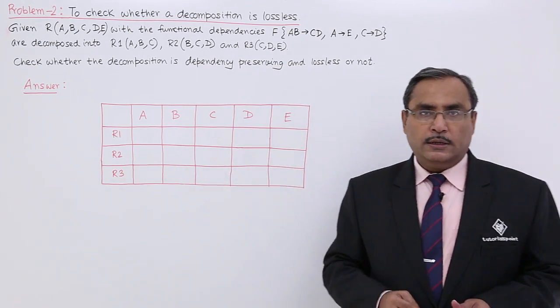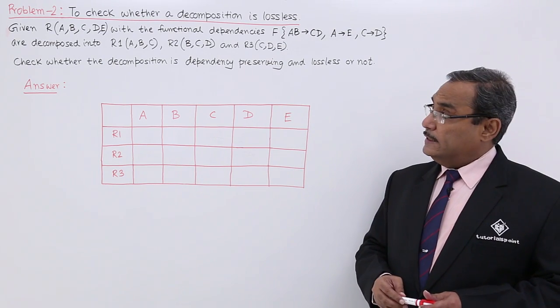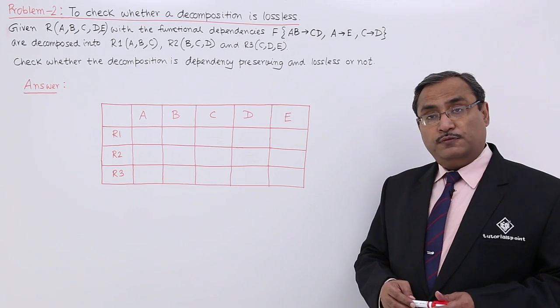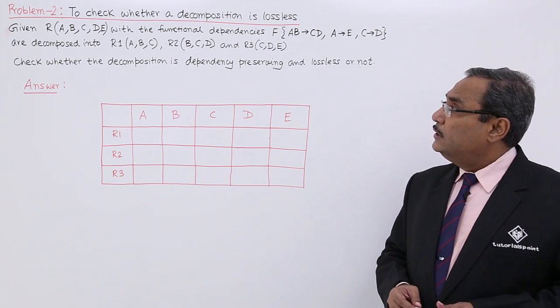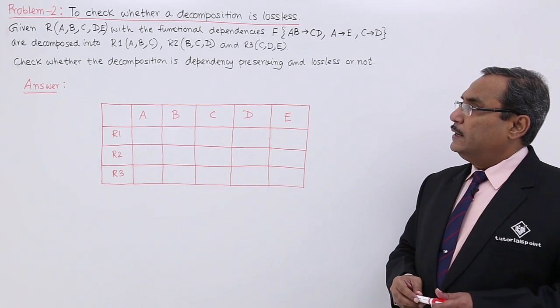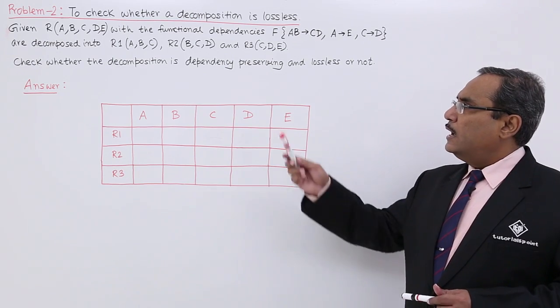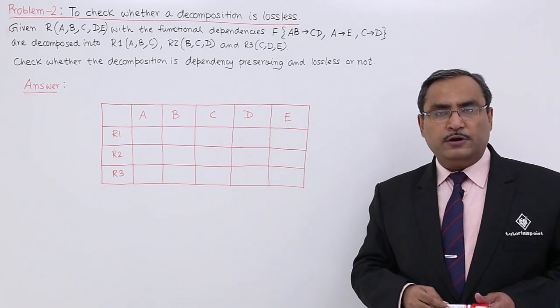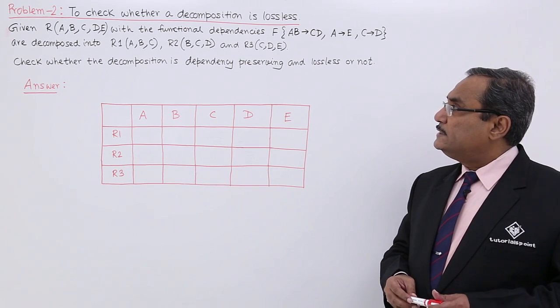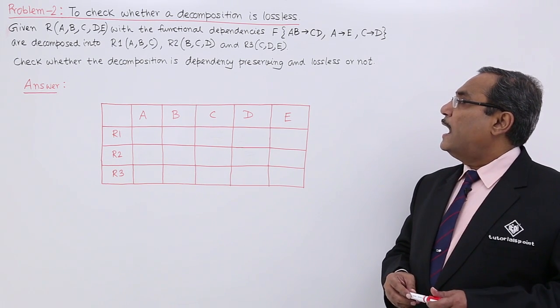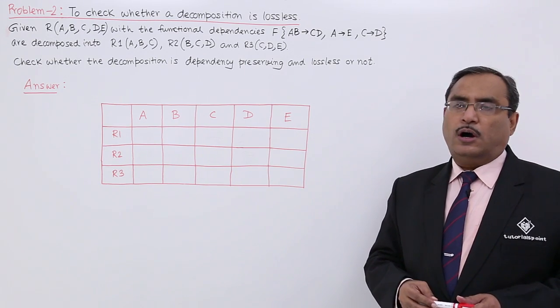Here is the problem for us. Given schema R, we are having the relation R that is A, B, C, D. Five attributes are there ranging from A to E with the functional dependencies given. They are decomposed into R1, R2 and R3 and the respective attributes are given to us. Check whether the decomposition is dependency preserving and lossless or not. This is the problem for us. How to solve it?